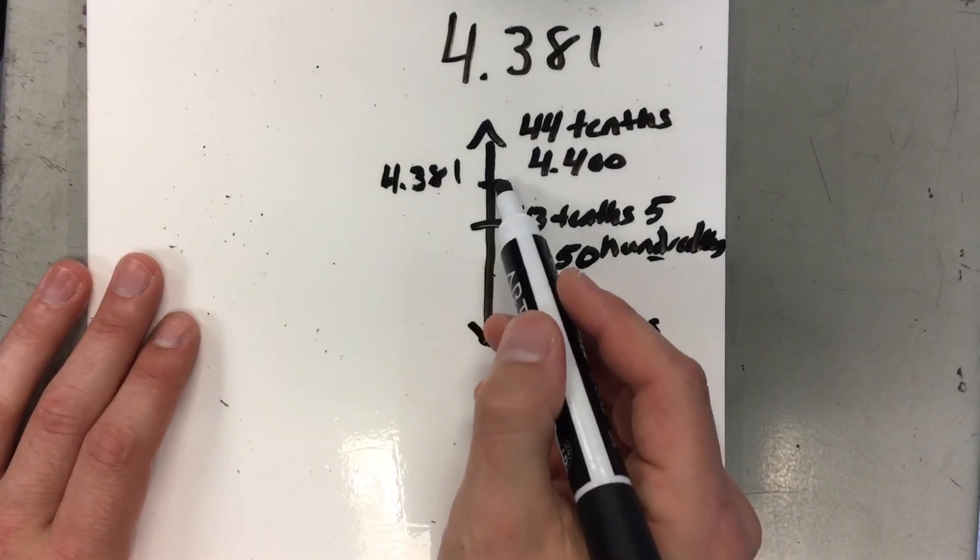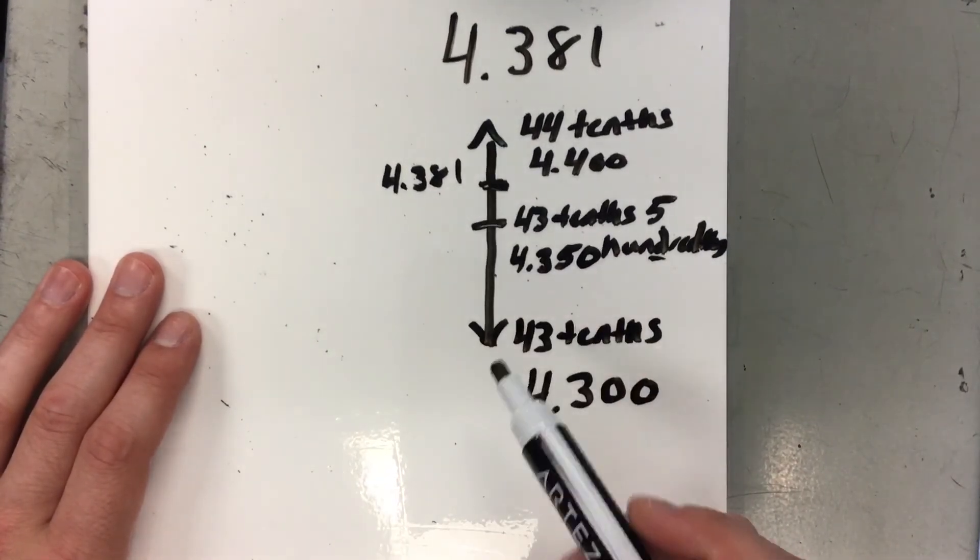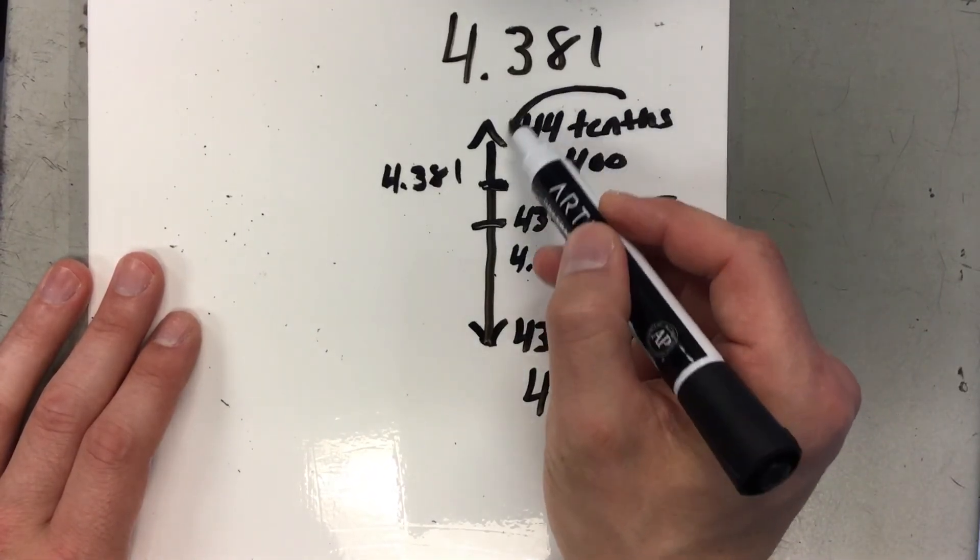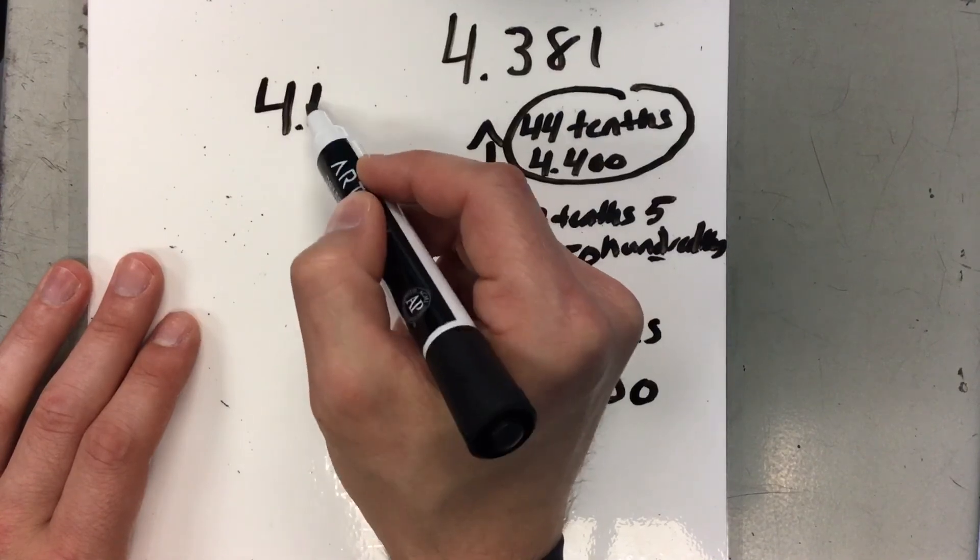We're going to label that there. So if it's on the midpoint or above, it rounds up. So I know this number is going to round up to 44 tenths or 4.4.